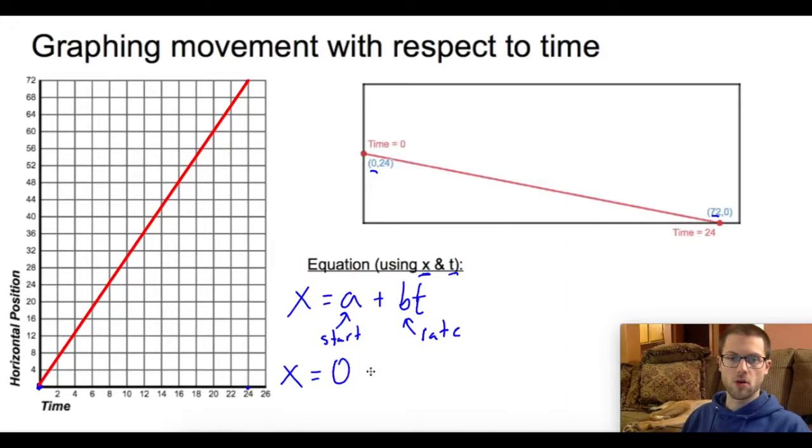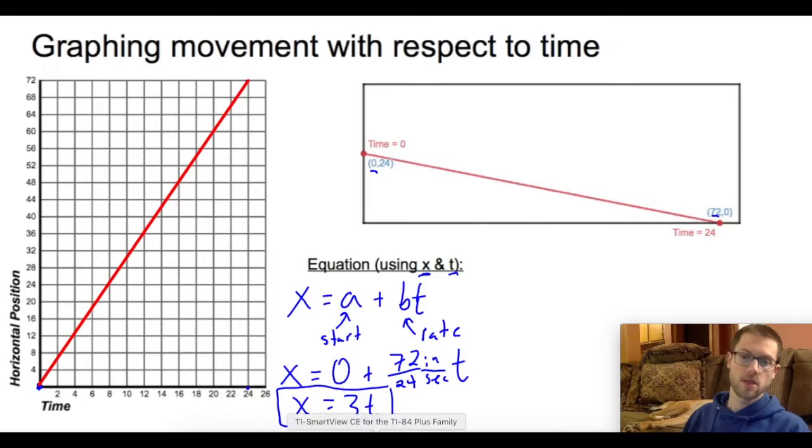So this is going to be 0 plus, and my rate is going to be up 72 and over 24. So that's going to be 72 over 24 and this is inches per second. It's a 72 inch rug and that's 72 inches over 24 seconds times my T. So putting that all together, this is going to be X equals, 72 divided by 24 is 3. So X will equal 3T is my equation with a horizontal position X and a time in seconds.